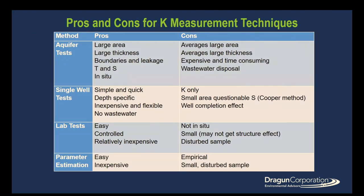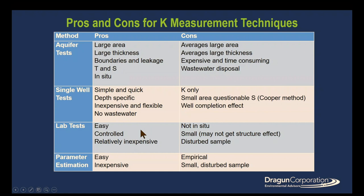There are lots of different pros and cons for the various techniques. One advantage of the aquifer test is that we can find out about the areal and spatial limitations of the aquifer and its boundaries. One problem is that you can have a large amount of contaminated wastewater that needs to be stored and disposed of. Single well tests are simple and quick, but they only tell you hydraulic conductivity in a small area and can be affected by well completion. Lab tests are easy to control with good repeatability, but they're not in-situ — samples are disturbed and you don't see structure. Parameter estimation like grain size is easy and inexpensive, but samples are disturbed and there's no structure.